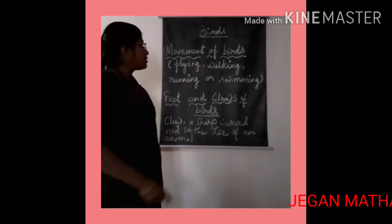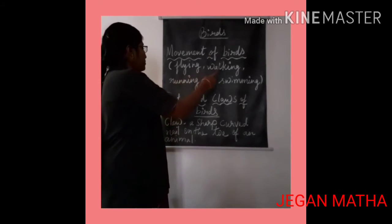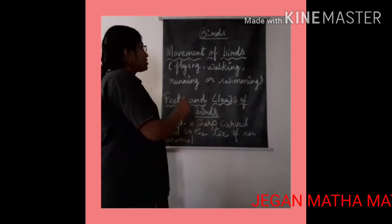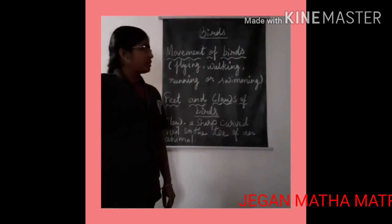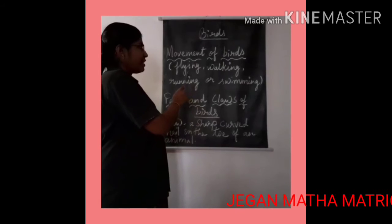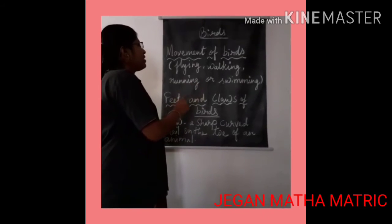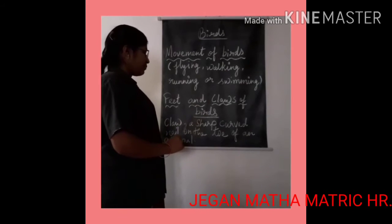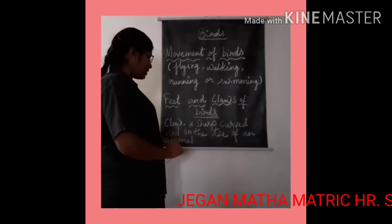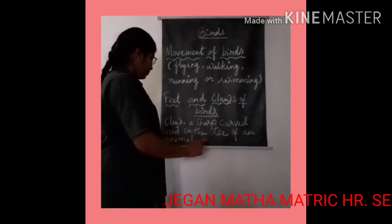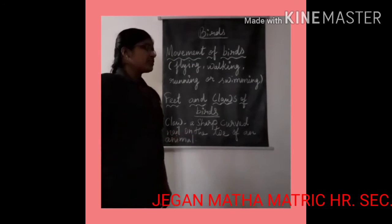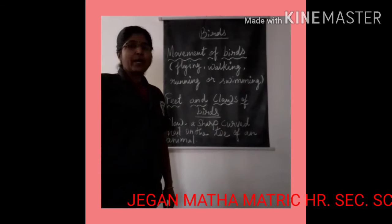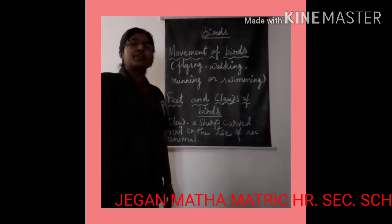In today's session, we are going to learn about movement of birds and feet and claws of birds. Different birds move in different ways such as flying, walking, running or swimming. Claws means a sharp curved nail on the toe of an animal. Different birds have different types of feet according to the place where they live.